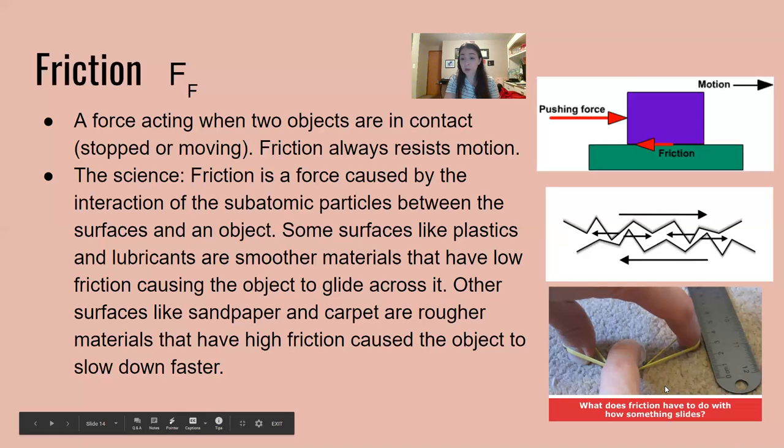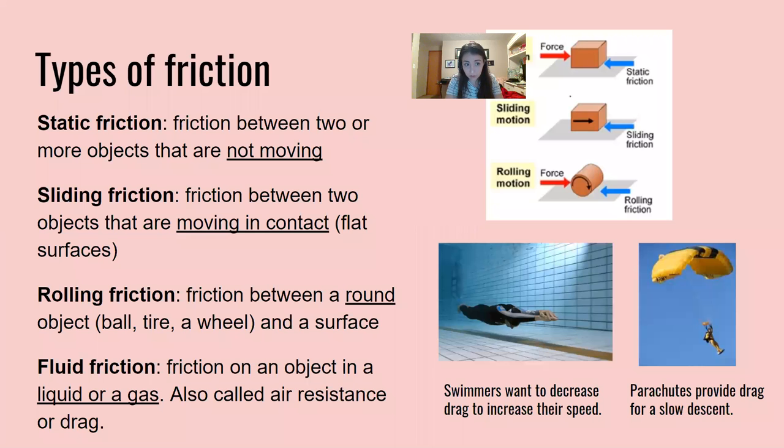The science behind friction is that it's a force caused by the interaction of subatomic particles between the surfaces and an object. Some surfaces like plastic and lubricants have smoother materials that have low friction causing the object to glide across it. Other surfaces like sandpaper and carpet are rougher materials that have high friction and cause the object to slow down faster. At a subatomic level, these surfaces have grooves or roughness that are interacting and colliding with each other causing friction. A smoother surface would have less of these grooves at a subatomic level, so they would glide more easily.